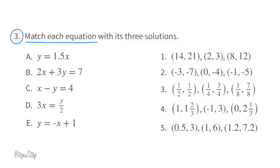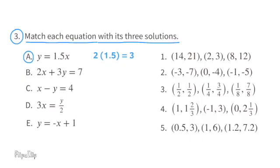Number 3: match each equation with its three solutions. A: y equals 1.5 times x. Using the first pair, 14 and 21: since 14 times 1.5 equals 21, that works. Next pair, 2 and 3: 2 times 1.5 equals 3, that also works. And 8 times 1.5 equals 12. All three sets for number 1 are a solution for A.